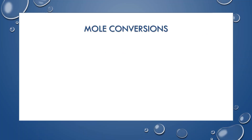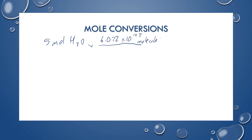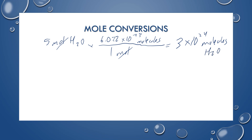We can convert back and forth between particles and the number of moles using Avogadro's number. Let's say I have five moles of water molecules. We know that 6.022 times 10 to the 23rd molecules are in one mole. Using dimensional analysis, the moles cancel — you multiply 5 times Avogadro's number — and you get 3 times 10 to the 24th molecules of water, to 1 sig fig.